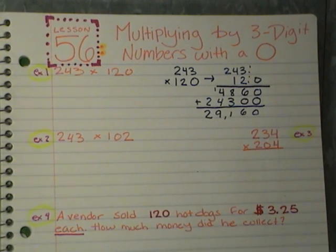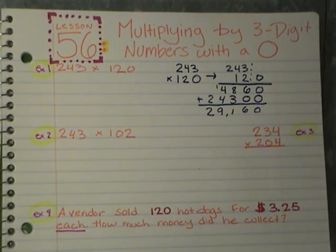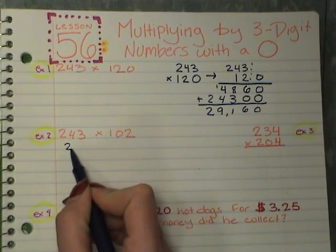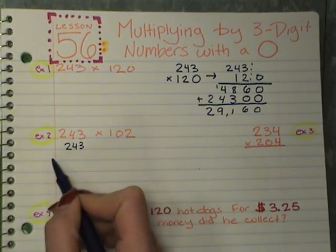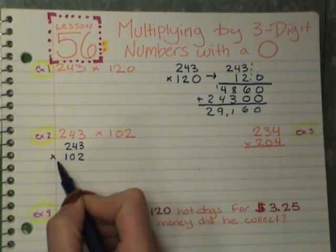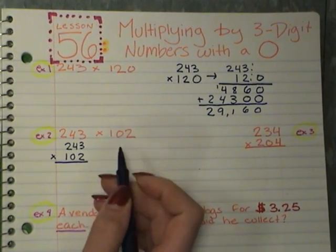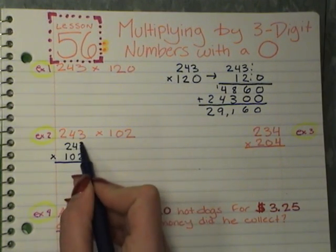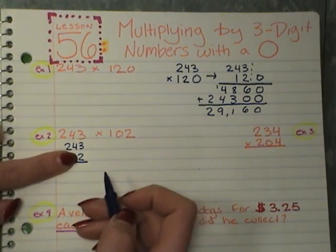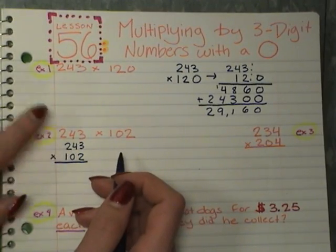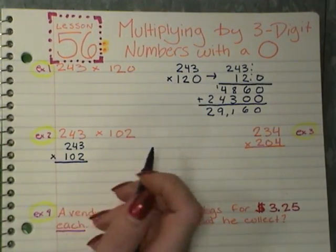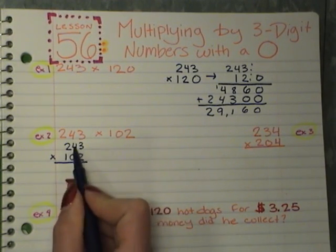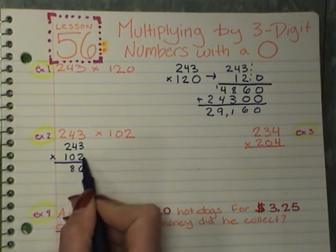Okay, we're going to do the next one together, again, because it is a little bit different. So I'm going to take my 243 times 102. Now, I don't offset this because my zero is not on the end. So I'm going to do my normal multiplication here. 2 times 3, remember I can cover it if I want. On your dry erase boards, you've been erasing it and writing it back, whatever works for you. 2 times 3, 6. 2 times 4, 8. 2 times 2, 4.